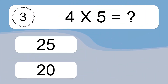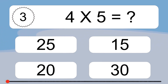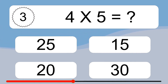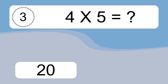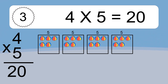4 times 5 equals what? We have 4 boxes, and each box has 5 colorful balls inside. If you count all the balls in all the boxes together, you will have 4 times 5 balls. This equals 20 balls.